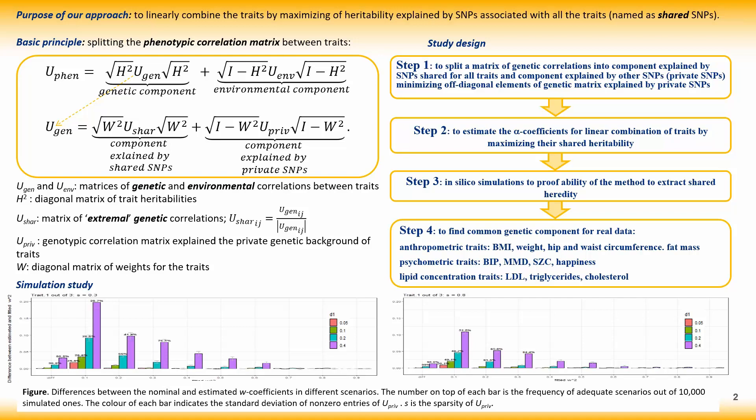The next step was real data assessment. We took three sets of correlated phenotypic traits to find shared heritability. The first set contains anthropometric traits related to obesity such as BMI and whole body fat mass. The second set is mental disorders such as bipolar disorder, schizophrenia, and low level of happiness. The third group includes lipid plasma concentration traits: LDL, triglycerides, and cholesterol.